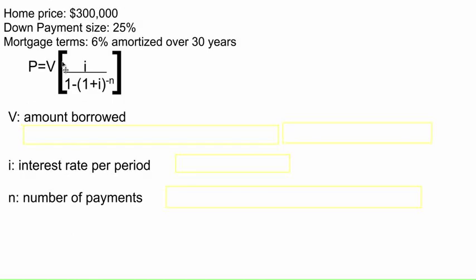When you're dealing with an amortization problem, you're going to use the amortization formula, which is right here. The variables are: P is the payment size, V is the amount borrowed, I is the interest rate per period — not necessarily exactly what you're given, it depends on how often you're paying — and N is the number of payments you're making.